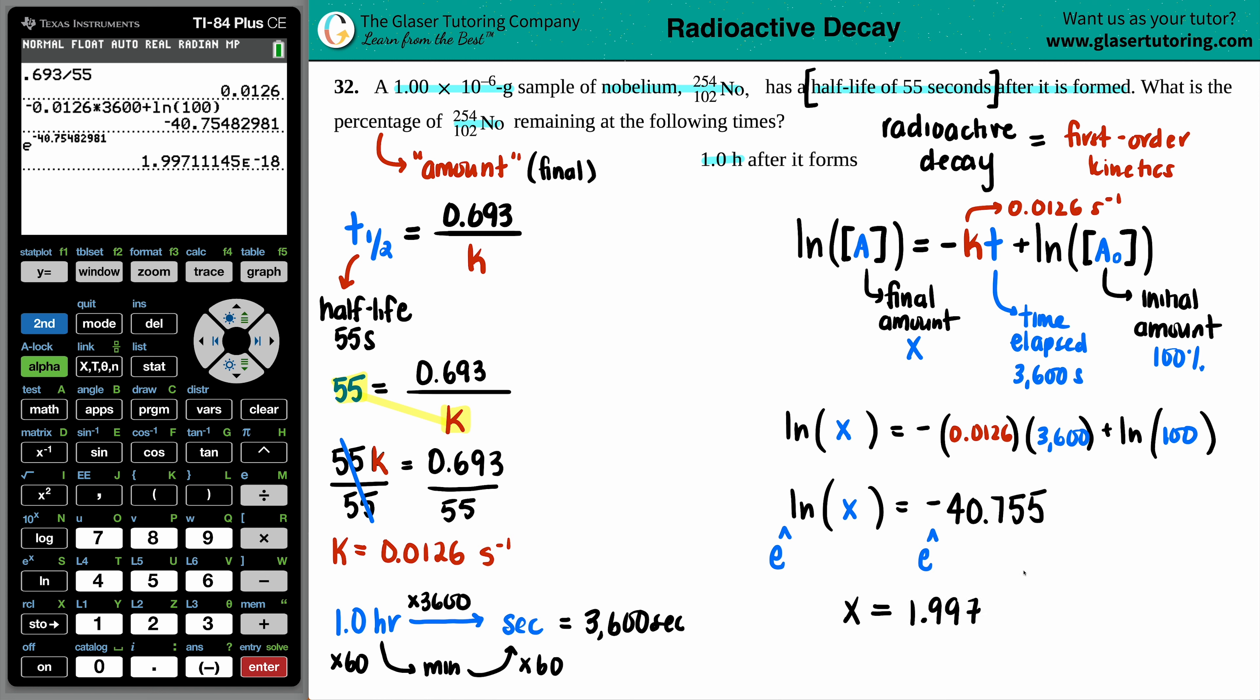So 1.997, I mean I guess we should round to 2.0, right, for sig figs. But does anybody care at this point? I hear crickets, I don't hear anything, right? Nobody cares. So 2.0 times 10 to the negative 18, and this is actually in a percent because we started off with 100 percent. Now you have 2.0 times 10 to the negative 18 percent. That's essentially zero.